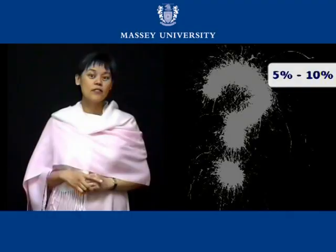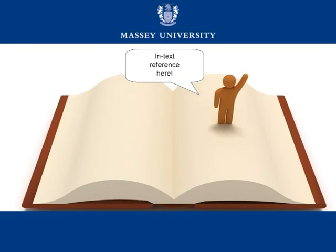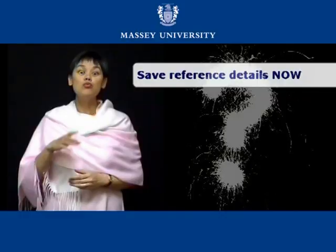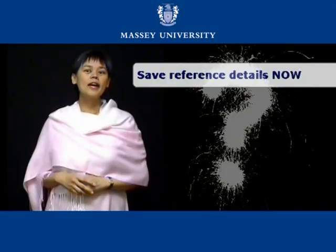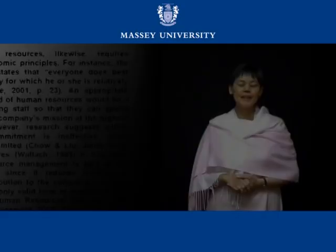A good rule of thumb is not to have more than 5-10% of your assignment in direct quotes. When you make an in-text reference in your assignment, go straight to the end of the reference list and write down the complete details of the reference there and then. This will make compiling your reference list so much easier and save you time.